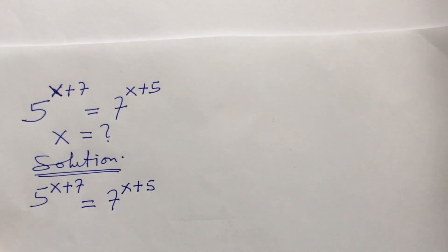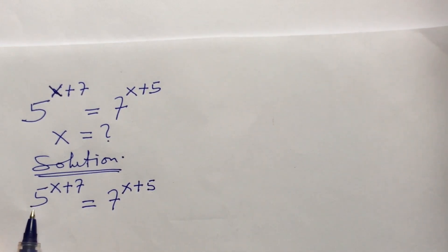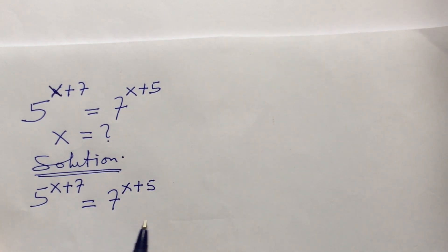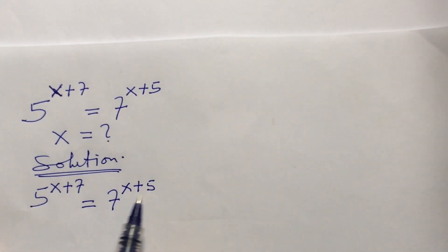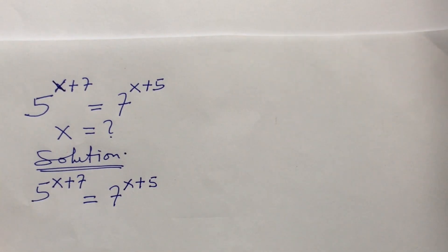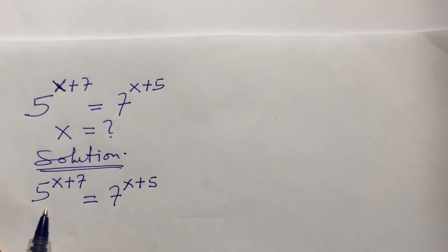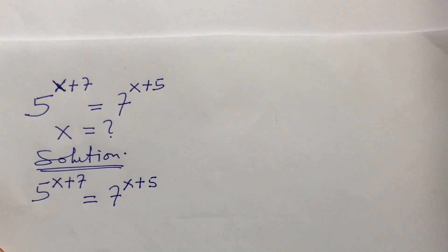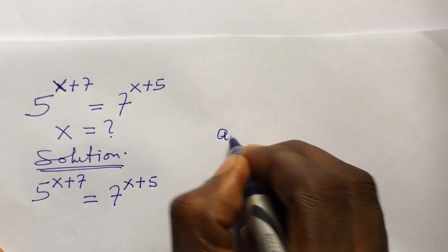By the properties of log, we can start by taking the log base 10 or the ln of both sides of this equation. However, the method I want to use here is to open up everything — in other words, I want to rewrite the left-hand side and the right-hand side of the equation.